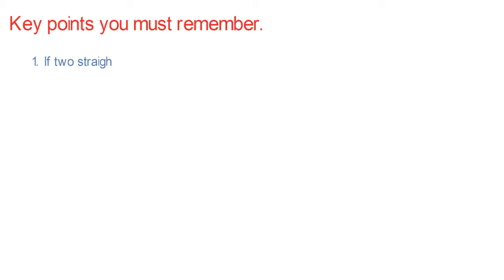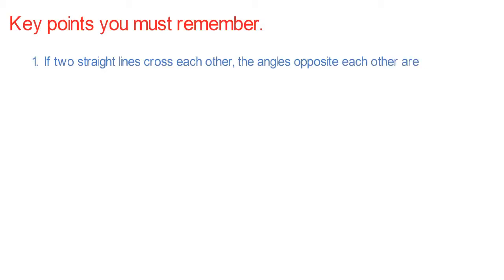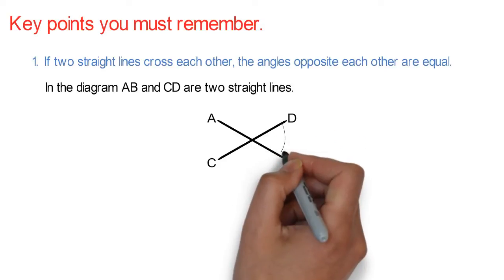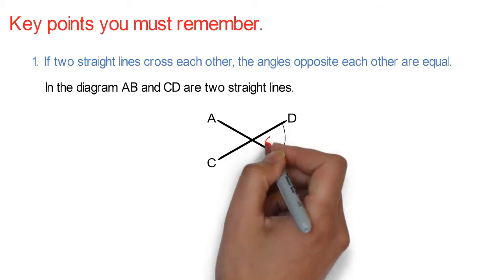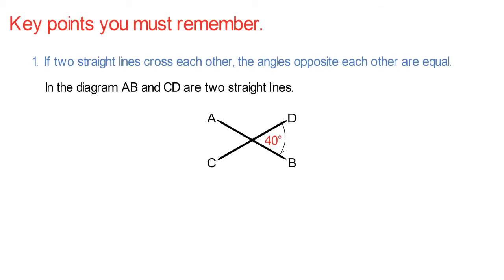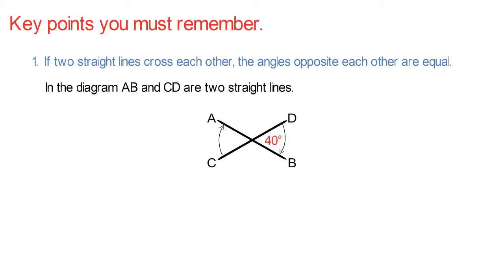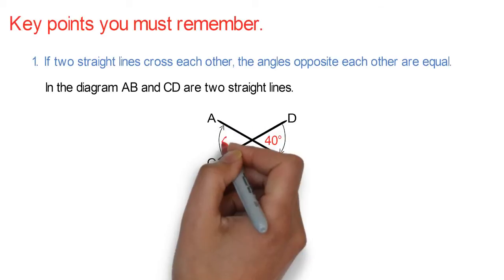Point 1. If two straight lines cross each other, the angles opposite each other are equal. In the diagram, A, B and C, D are two straight lines. If this angle is 40 degrees, then the angle opposite it must also be 40 degrees.